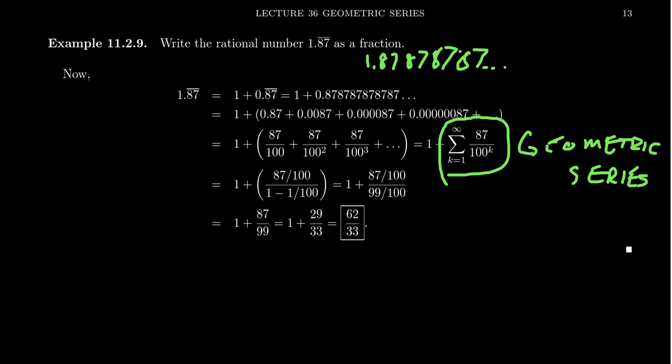When k equals 1, the first term is 87 over 100. That's our first term. We're using the fact that this will look like a over 1 minus r, where a is the first term in the sequence and r is the constant ratio.